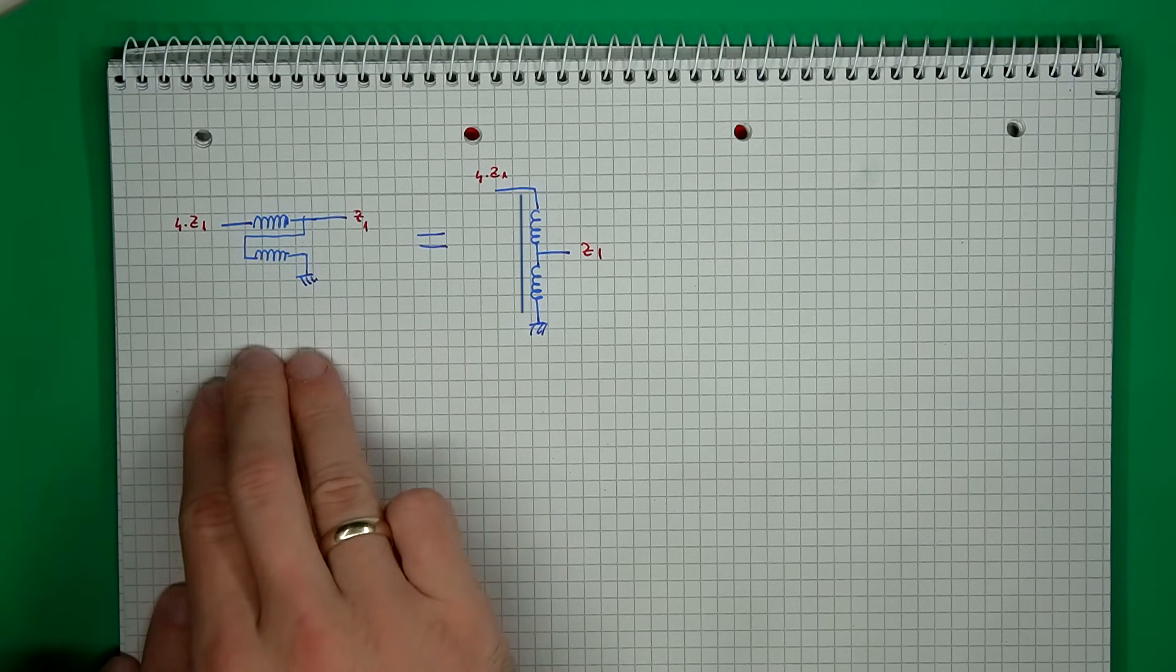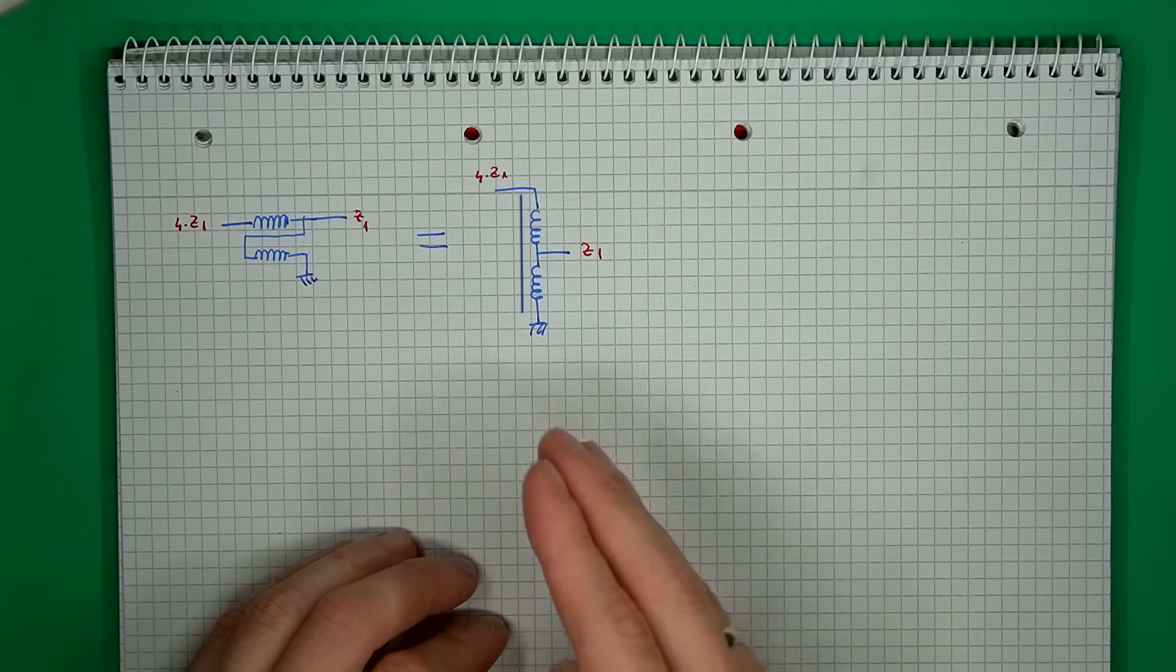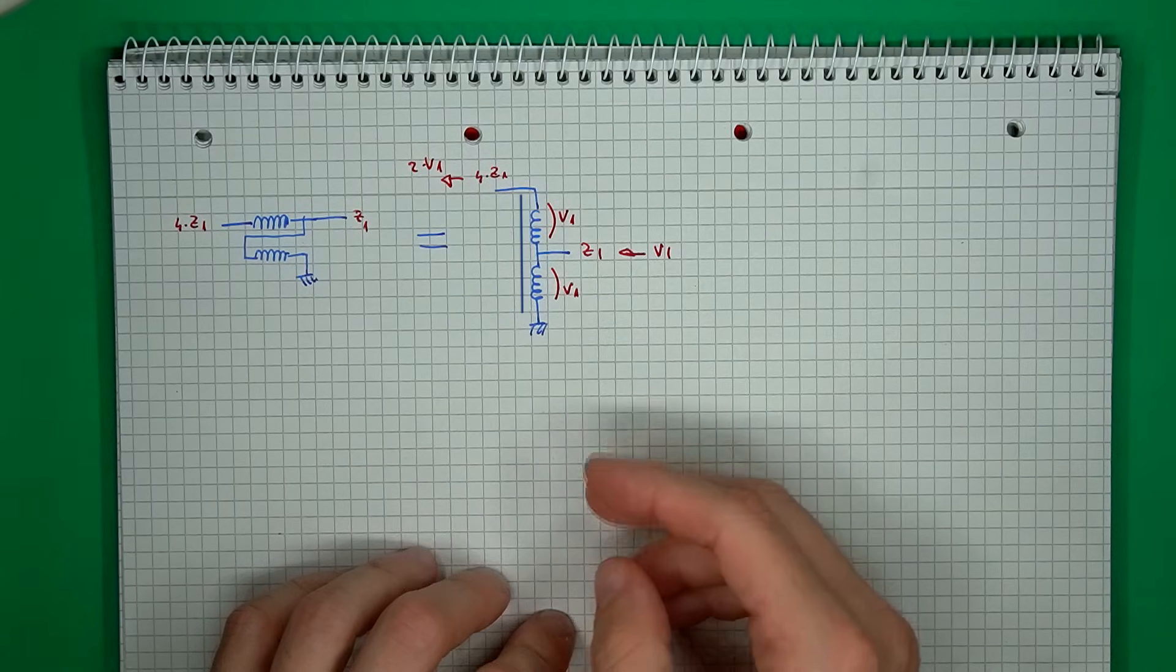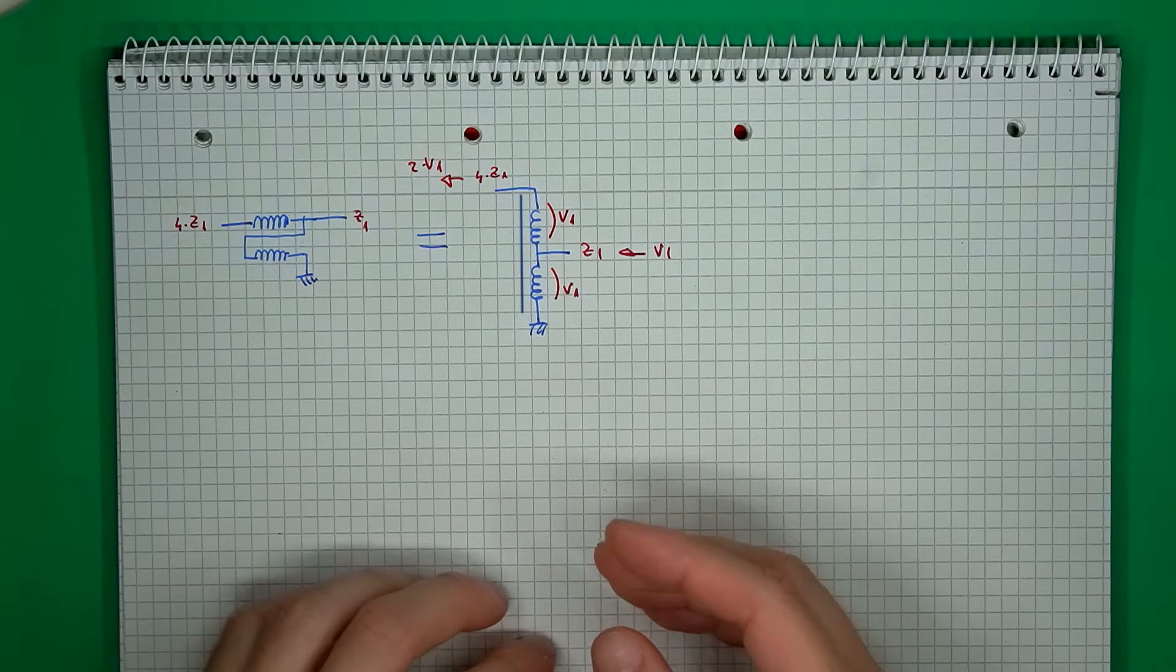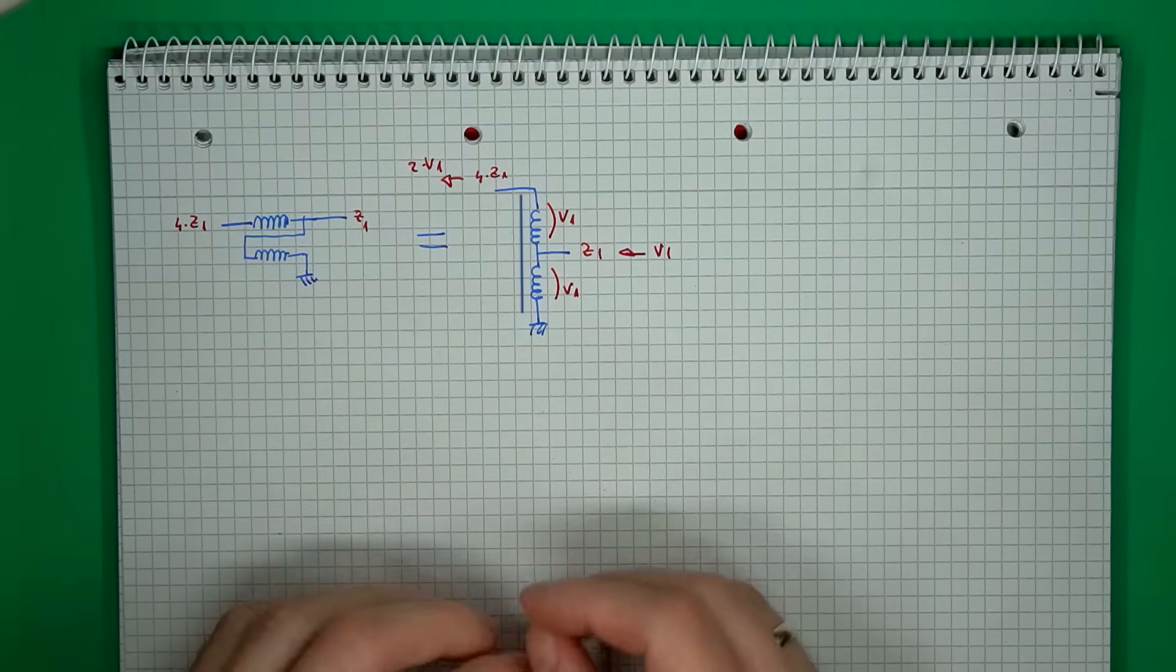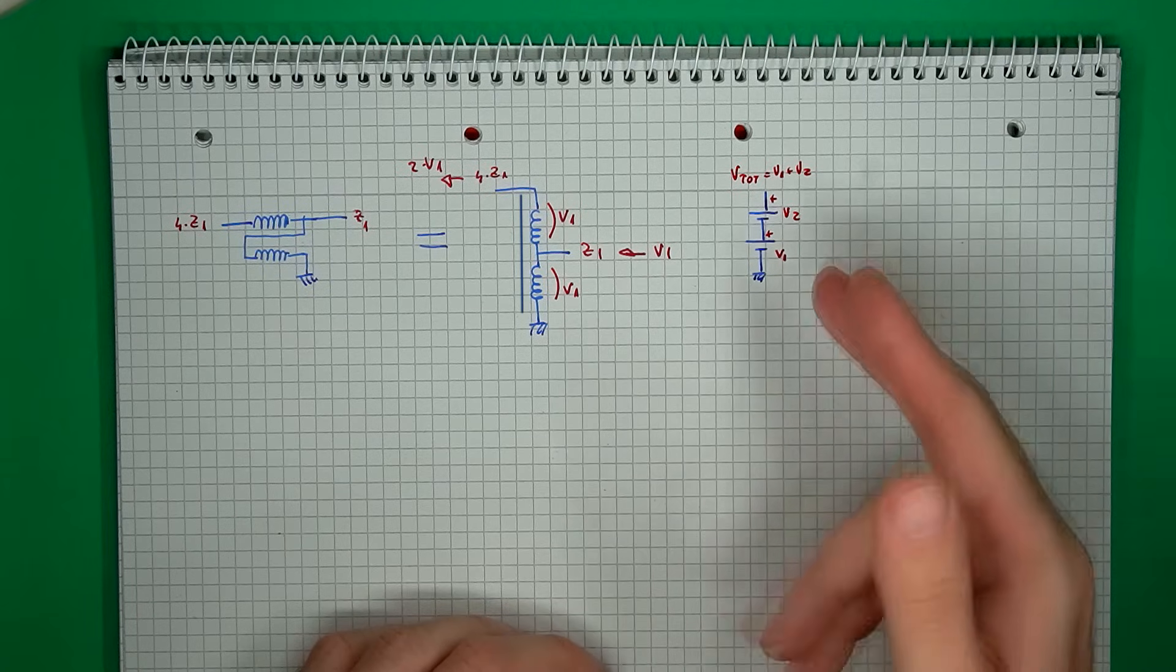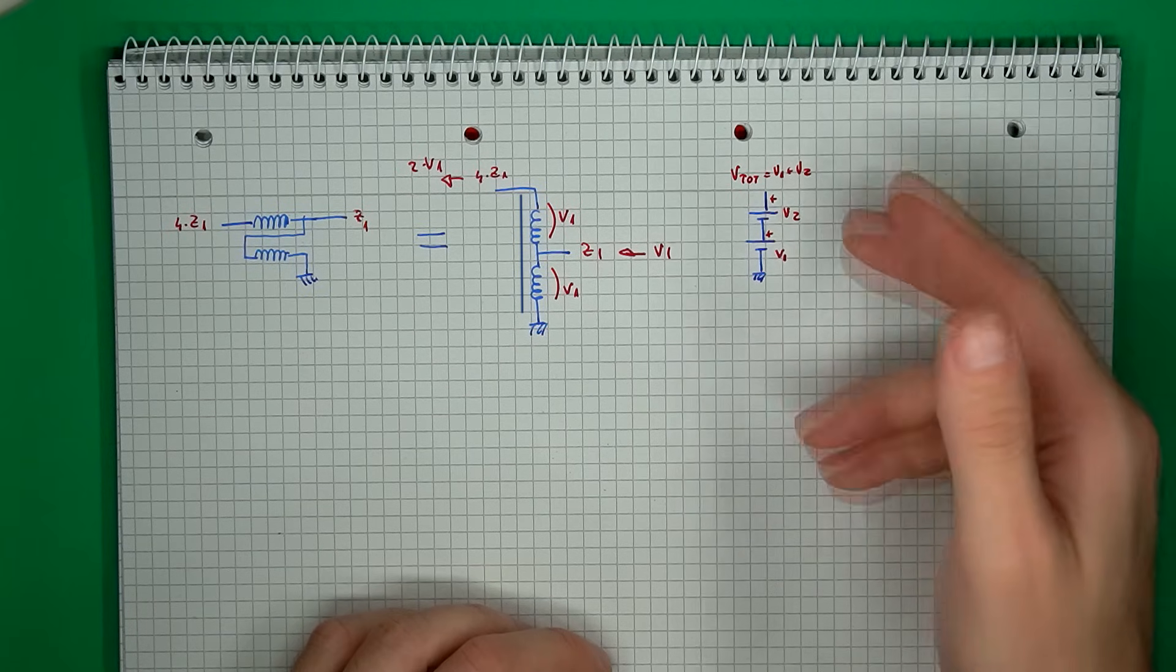If we take our 1 to 4 Ruthroff transformer and redraw it a bit, this way we can highlight that this is used as a voltage transformer. So if we apply V1 on the low impedance input, this voltage is induced into the second winding through the transformer, and the total voltage on the high impedance side is then two times the input voltage, so it's the voltage drop on the two inductors. In other words, this transformer is adding two voltages together. So how hard can this be?